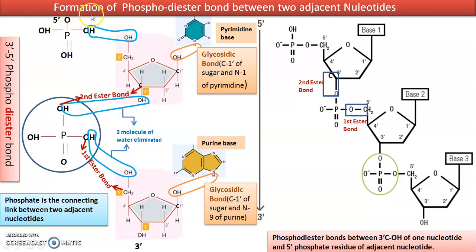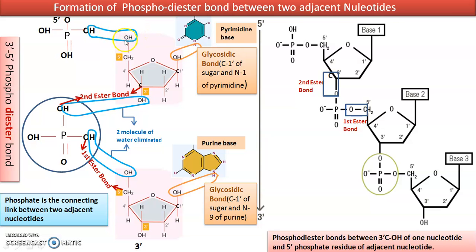We already discussed about the structure of a complete nucleotide — a pentosugar with a purine or a pyrimidine connected by a glycosidic bond. We discussed about the ester bond between the phosphate group and the fifth carbon of the pentosugar — a C-O ester bond formed by elimination of water between the two.